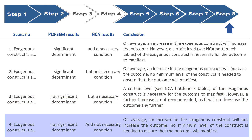If it's neither a significant determinant nor a necessary condition, we can say that the increase of X will not increase Y and there is no minimum level of X needed to ensure the outcome will manifest.